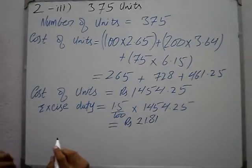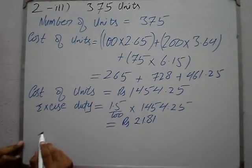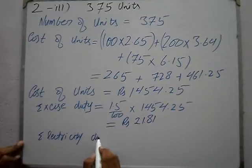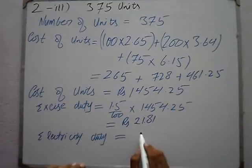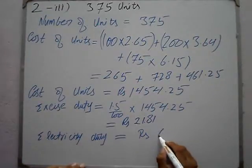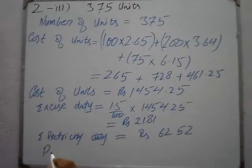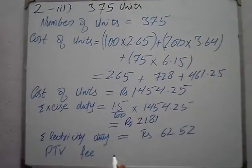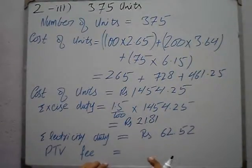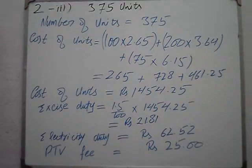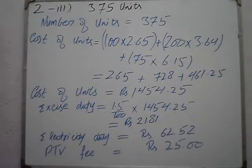Electricity duty and PTV fee are fixed constants. Electricity duty kitni hai — Rs 62.52. PTV (Pakistan Television) fee jo ki hai — as per example on page 123 — Rs 25.